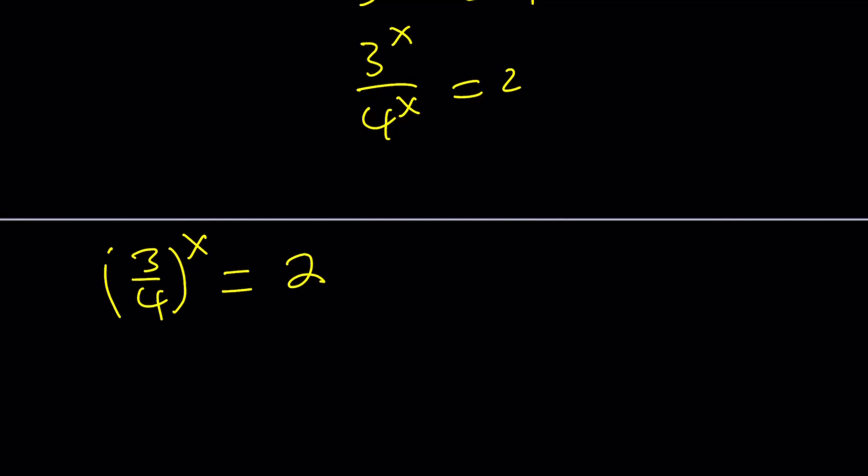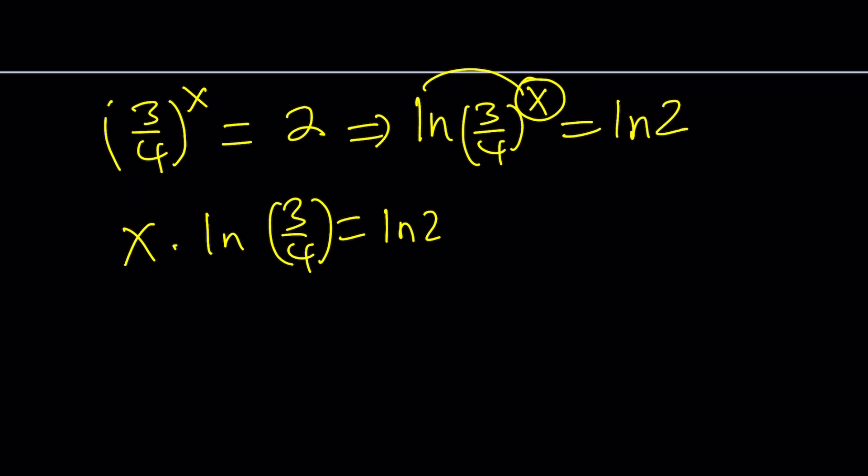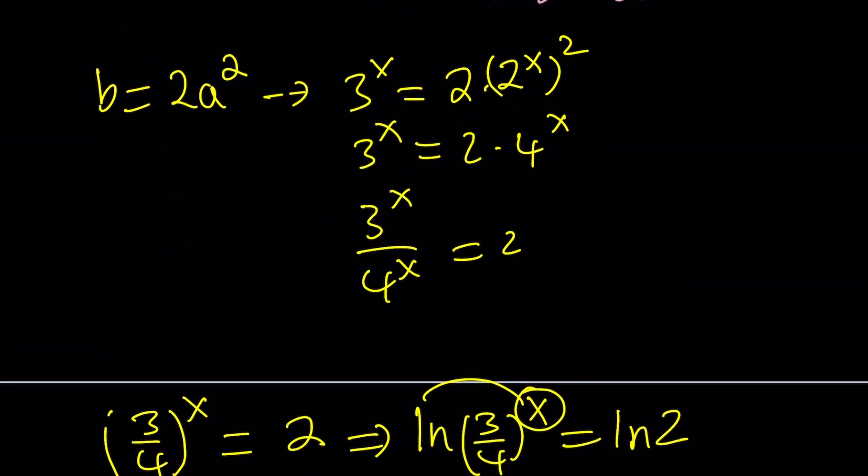So at this point we can use logs because we have an exponential function and x is the unknown. So I do need to log or ln or whatever you want to do. Let's go ahead and use natural log on both sides. And then that's going to give us x. Bring it to the front. x times ln 3 fourths equals ln 2. And finally by division you get the value of x. That's what I was looking for. Great. So that's the value of x and that's basically one of the methods.